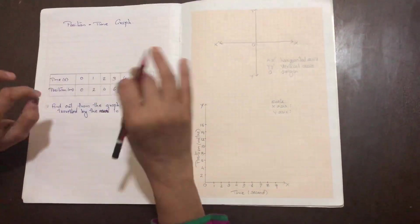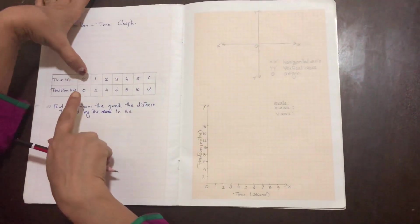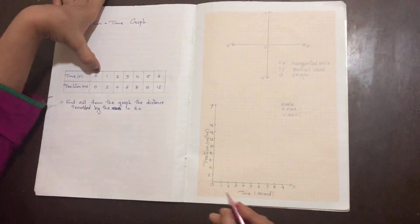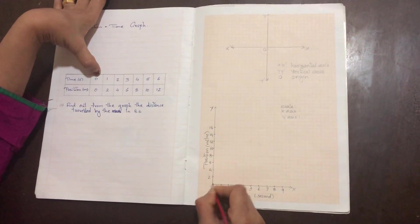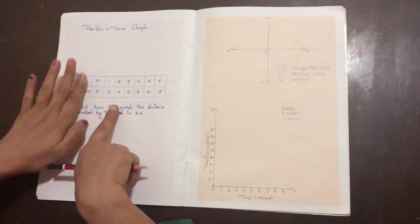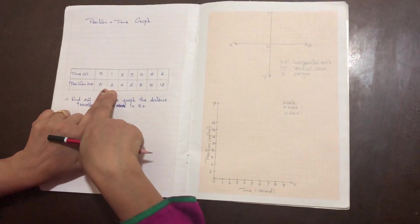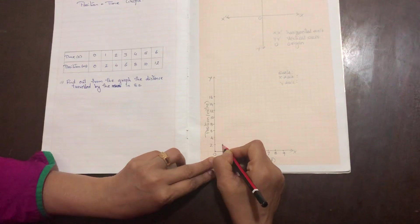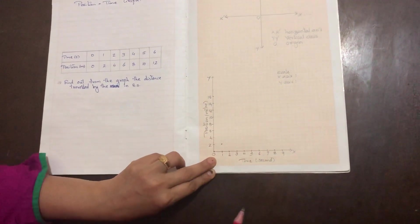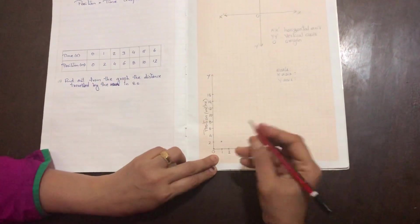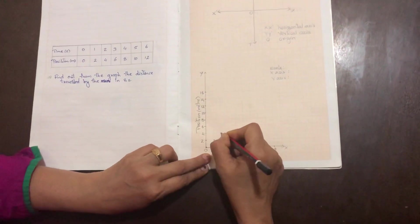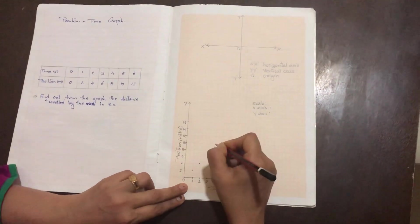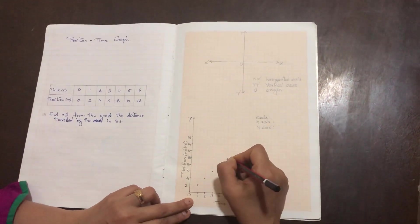Now from the data: at zero seconds the position is zero, so the first point is at the origin. At one second the position is two meters, so the point is at (1, 2). At two seconds it is four meters, so the point is at (2, 4). Continuing: three seconds is six meters, four seconds is eight meters, and five seconds is ten meters.